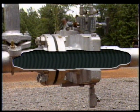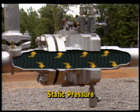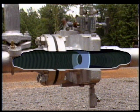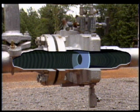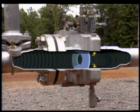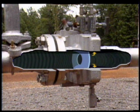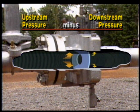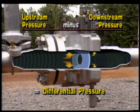Fluid flowing through a pipe exerts a constant pressure called static pressure on the walls of the pipe. When a constriction like this orifice plate is placed in the pipe, the velocity of the fluid is increased. The higher velocity fluid on the downstream side of the orifice plate creates a static pressure lower than the static pressure exerted on the upstream side. The difference between the upstream and downstream static pressures is known as differential pressure.